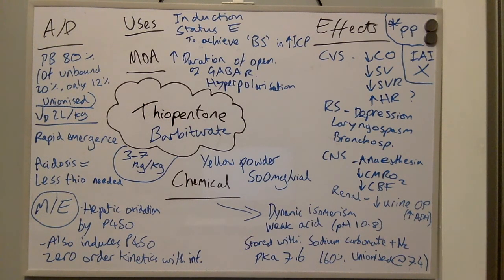In the vial, it is stored with sodium carbonate and nitrogen. It has a pKa of 7.6 and exists as 60% unionised at a pH of 7.4.